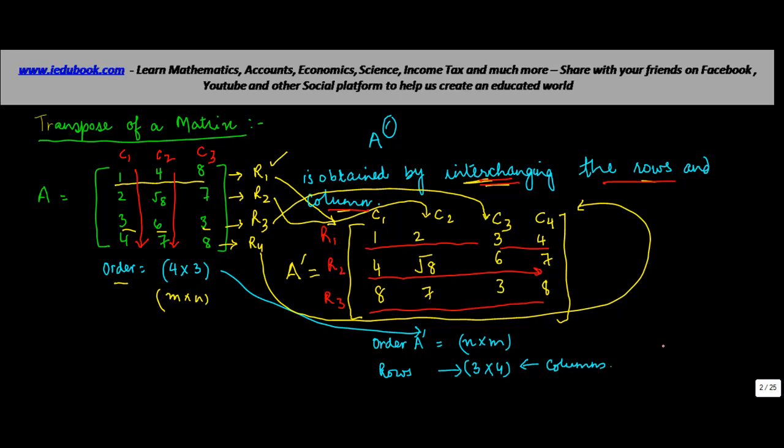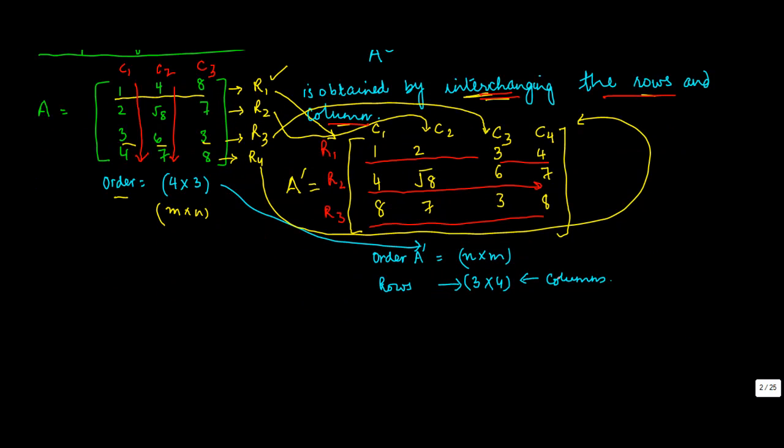But before that, let me just do a simple one matrix again for you. So, let's say you have B which is equal to 4, 5, 6, 7, 8, 9, 10, 11, 12. Which is a 3 by 3 matrix.